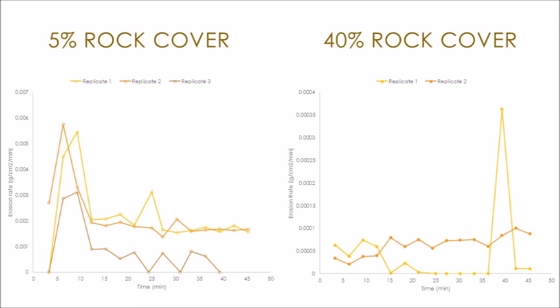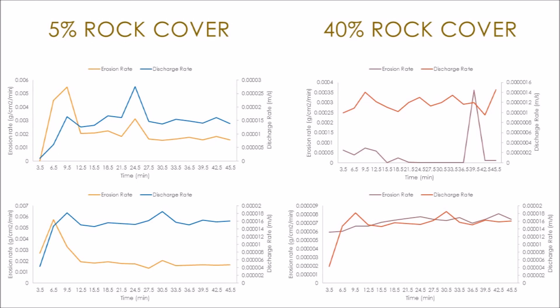In comparison, with more rock cover (40%), the erosion rates remain fairly stable, only increasing slightly over time. One sample has a large spike around 40 minutes, but this is an outlier given it had zero erosion 20 minutes prior. We also explored the erosion rates versus discharge rate, and they correlate with each other, especially in the 5% rock cover graphs. With 40% rock cover, there is less discharge noted, due to water velocity being slowed by friction from increased rock cover.